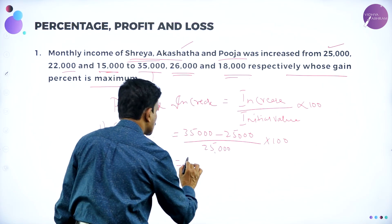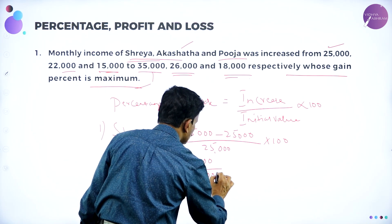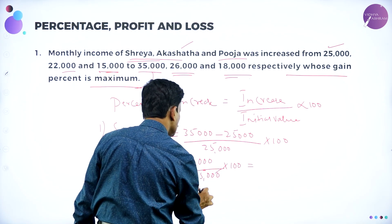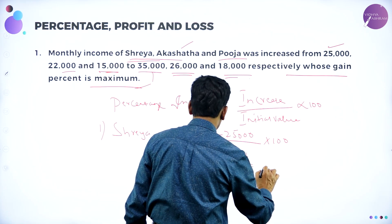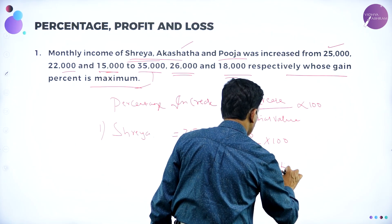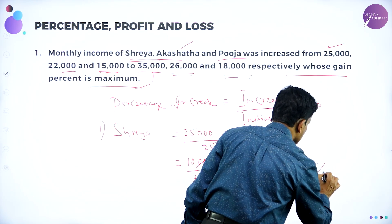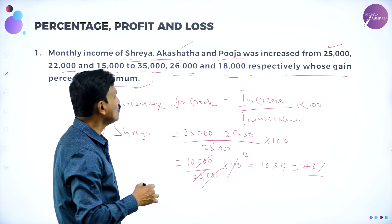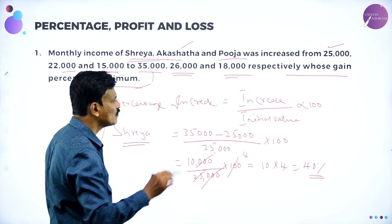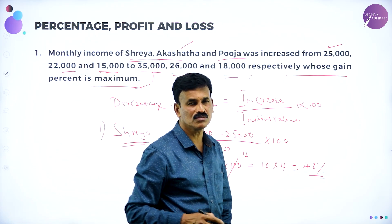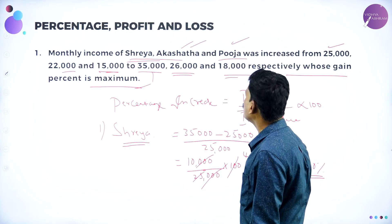So 35,000 minus 25,000 is 10,000, divided by 25,000 into 100. The zeros cancel, giving 10,000 divided by 25,000 into 100, which equals 40 percent. So the percentage increase in Shreya's income is 40 percent.